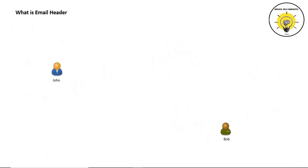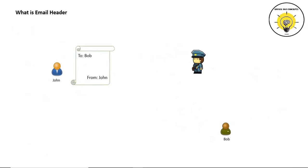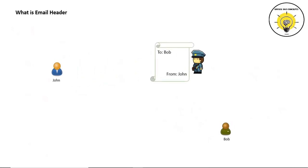Before we discuss what is an email header, let's discuss how a letter or an envelope is sent to a recipient. In this scenario, John is going to send a letter to Bob. John will write a letter and in the 'To' field he will type the name and address of Bob, and in the 'From' field he will type his name and his address. When John sends this letter, a postman will pick it up and check the 'To' and 'From' details. 'To' is the address of the recipient where the postman will deliver this letter, and 'From' will be treated as the return path.